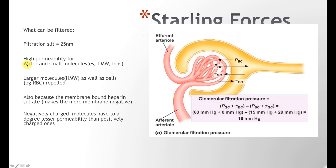In between the foot processes are small slits ranging in size around 25 nanometers. Combined with membrane permeability, this determines what can pass through and become filtered. These things are water and very small molecules such as ions — low molecular weight (LMW) molecules. Larger molecules, high molecular weight molecules, and cells — especially red blood cells — are repelled. Additionally, heparin sulfate in the membrane is a negatively charged molecule, so it repels negatively charged molecules, while positively charged ones pass through much more easily.